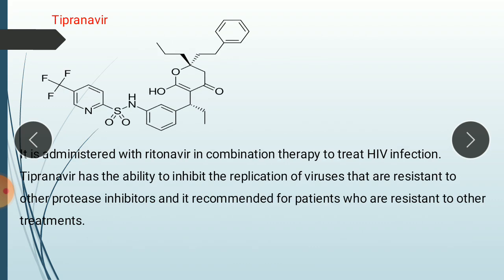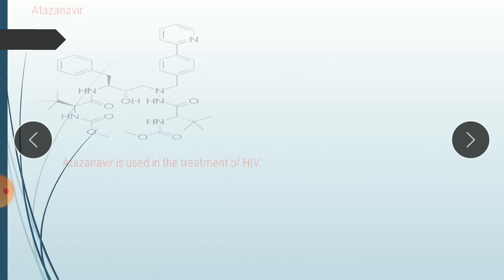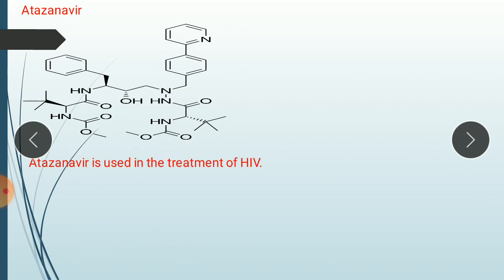The next drug is Darunavir. It is administered with ritonavir in combination therapy for treatment-experienced HIV infection. Darunavir has the ability to inhibit the replication of viruses that are resistant to other protease inhibitors, and it is recommended for patients who are resistant to other treatments. The last drug of this category is also used in the treatment of HIV.